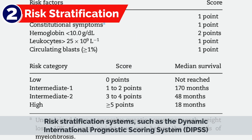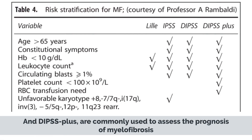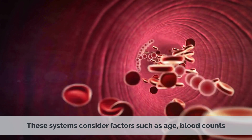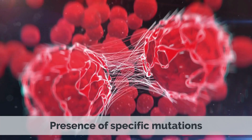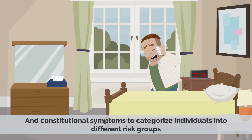2. Risk Stratification. Risk stratification systems, such as the Dynamic International Prognostic Scoring System (DIPSS) and DIPSS+, are commonly used to assess the prognosis of myelofibrosis. These systems consider factors such as age, blood counts, presence of specific mutations, and constitutional symptoms to categorize individuals into different risk groups.